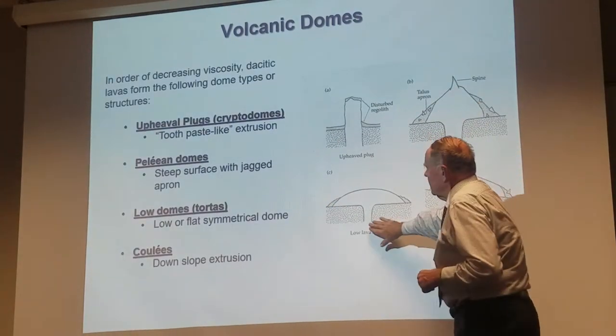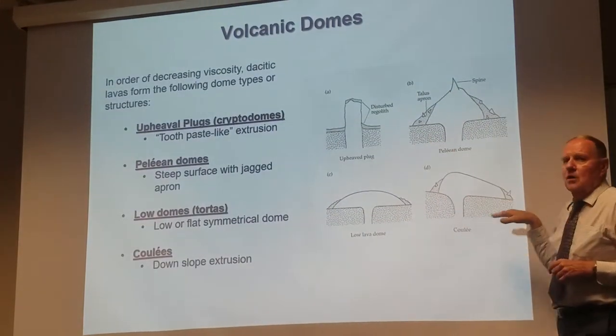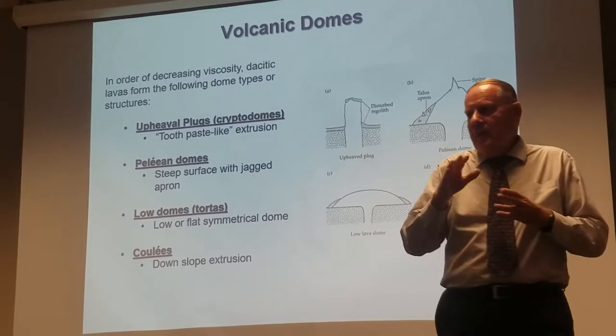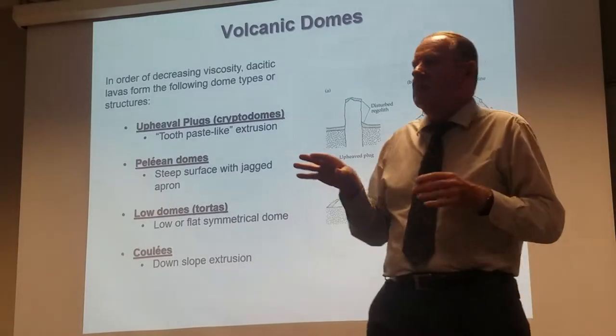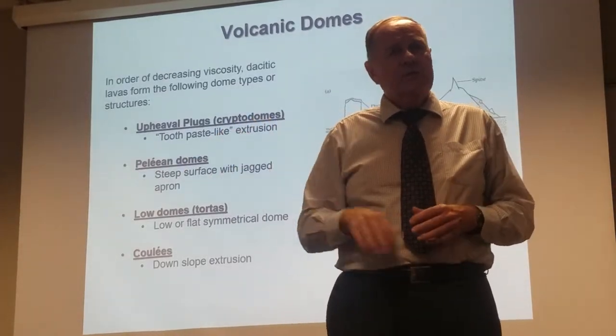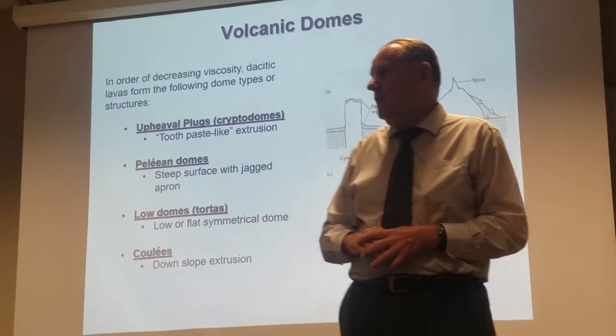A coulee is the same thing as a low dome, except it's sitting on a slope. So in addition to just flattening out, it's also flowing due to the influence of gravity down the slope.